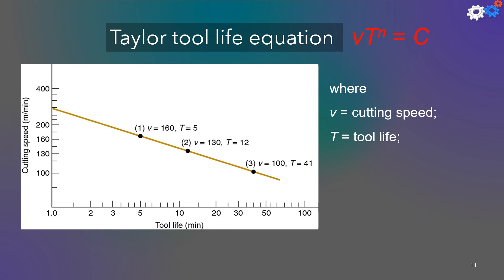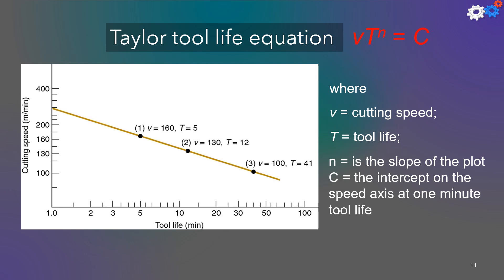In the Taylor equation, V is the cutting speed and T is the tool life. N and C are parameters that depend on the feed, depth of cut, work material, tooling material, and the tool life criterion used.